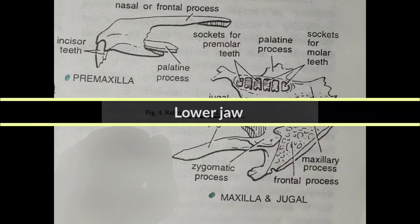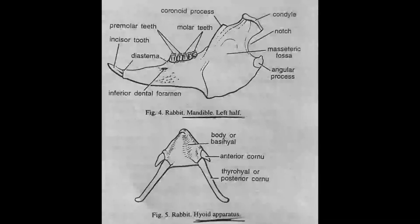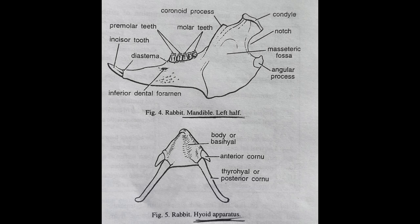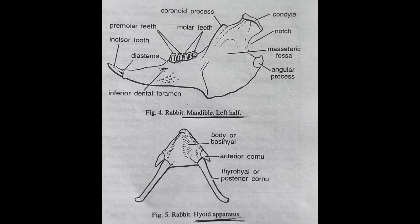The lower jaw or mandible consists, on either side, of a single membrane bone — the dentary — which forms the mandible. Each dentary is a somewhat triangular vertical bony plate bearing sockets for teeth along its upper edge. The condyle on the dentary is thick, elongated longitudinally, and set well above the level of the teeth. It articulates with the glenoid fossa of the squamosal, playing a role in jaw suspension of the rabbit.